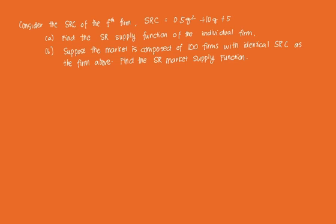Hi everyone and welcome to this video on an example of deriving the short-run supply function of an individual firm and eventually the market supply function in the short-run. Suppose we have this function: consider the short-run cost of a particular firm given as 0.5Q² + 10Q + 5. First, we find the short-run supply function of that individual firm, and assuming there are 100 firms with identical short-run costs, what is the short-run market supply function?